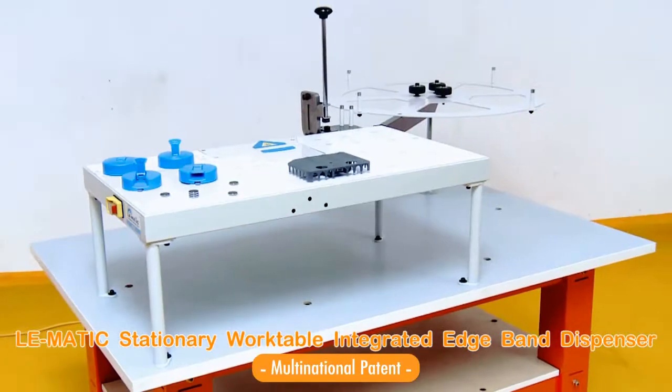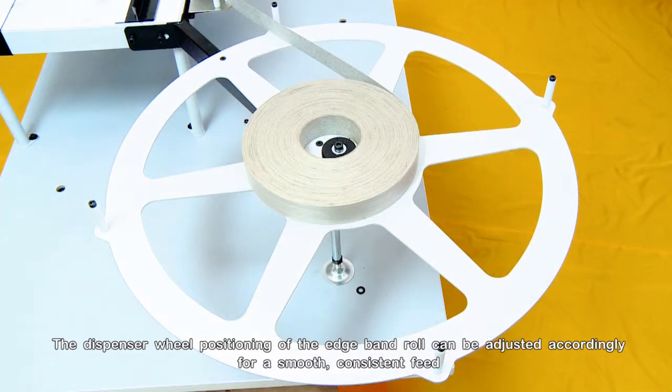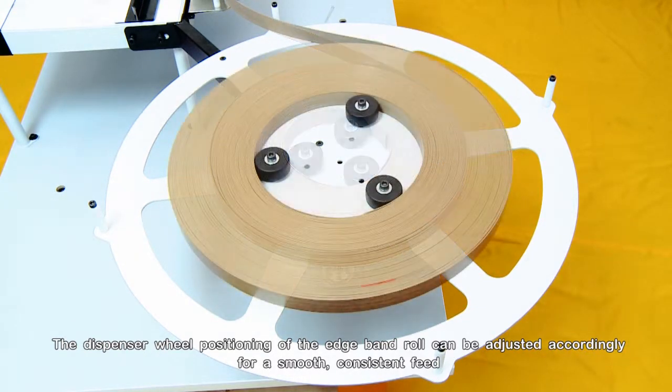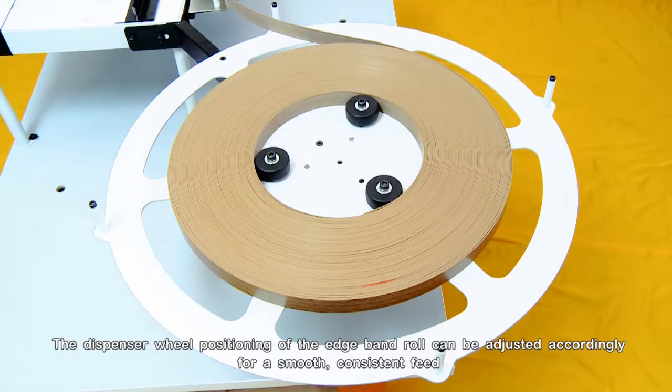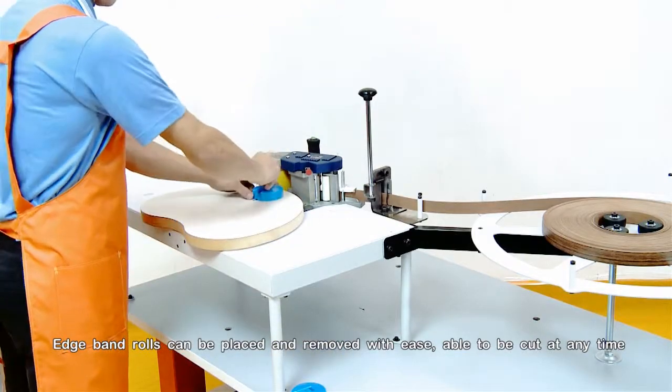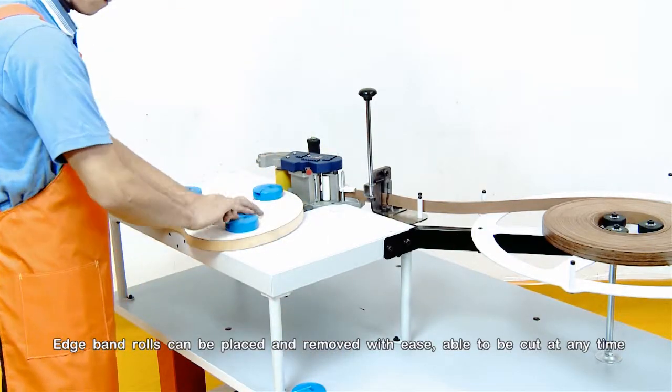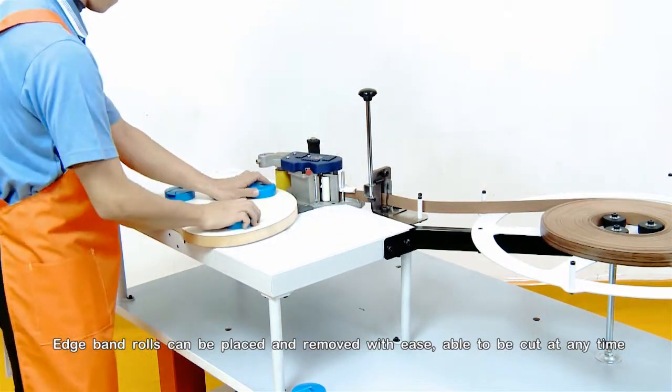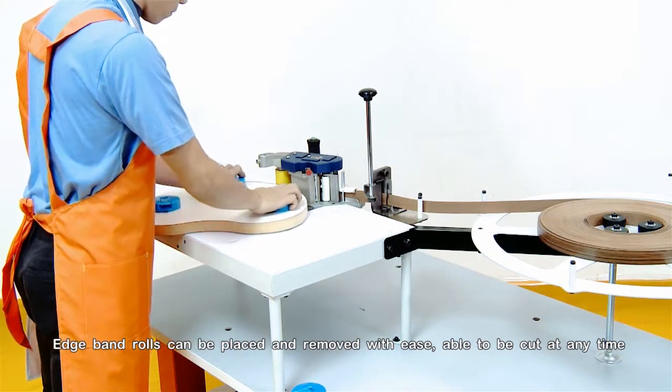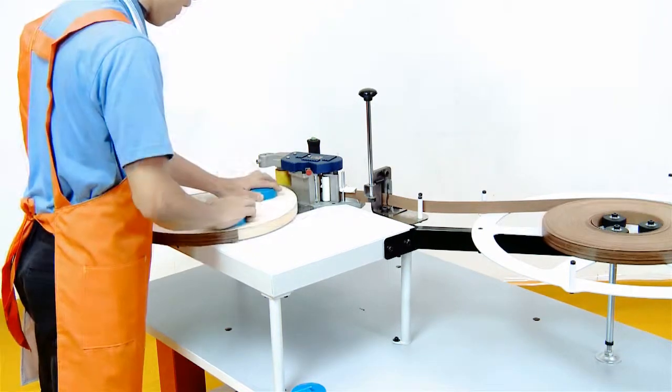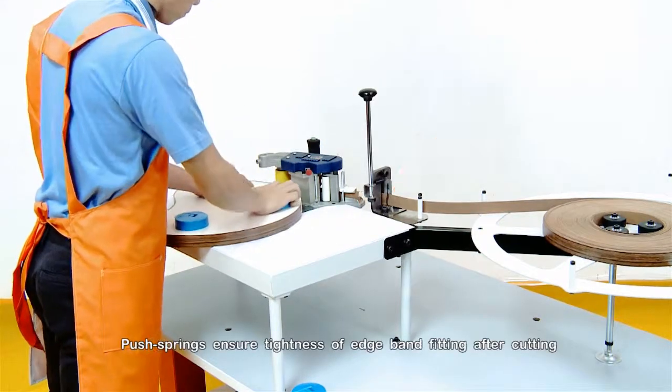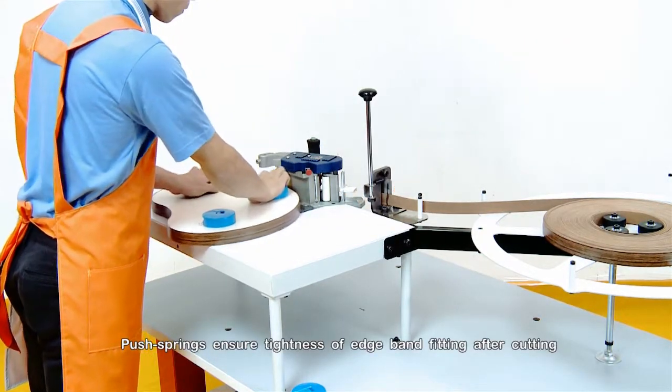The Lomatic Stationary Work Table Integrated Edge Band Dispenser. The dispenser wheel positioning of the edge band roll can be adjusted accordingly for a smooth, consistent feed. Edge band rolls can be placed and removed with ease, able to be cut at any time. Push springs ensure tightness of edge band fitting after cutting.